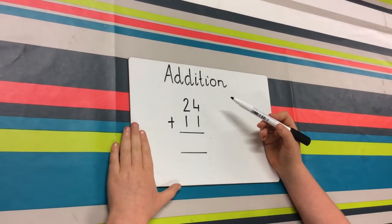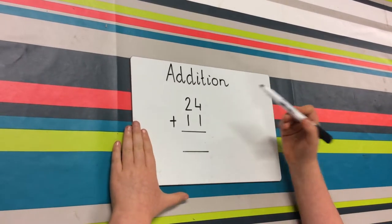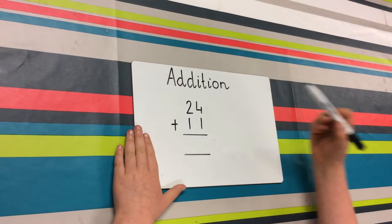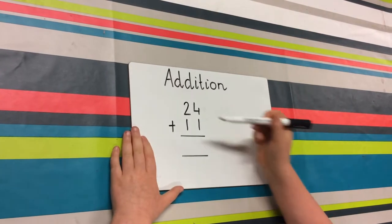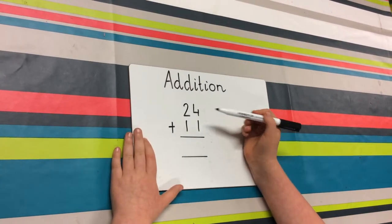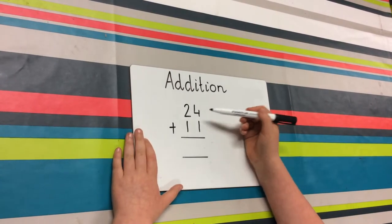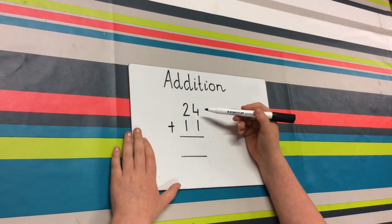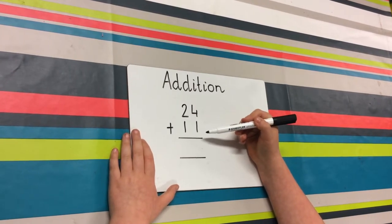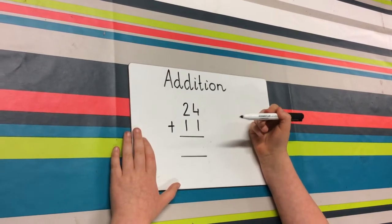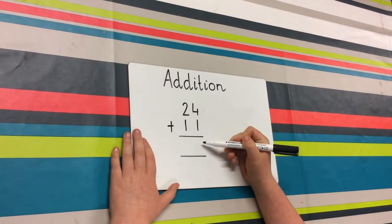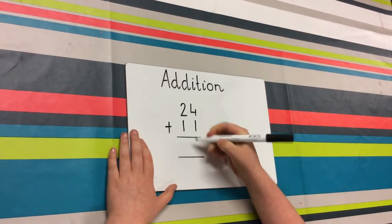I'm going to show you how to do a regular addition sum. And the sum is 24 add 11. Now, the first thing that you do is you add the 4 and the 1, which is 5. Where do you put the 5? You put it just in the answer line here.